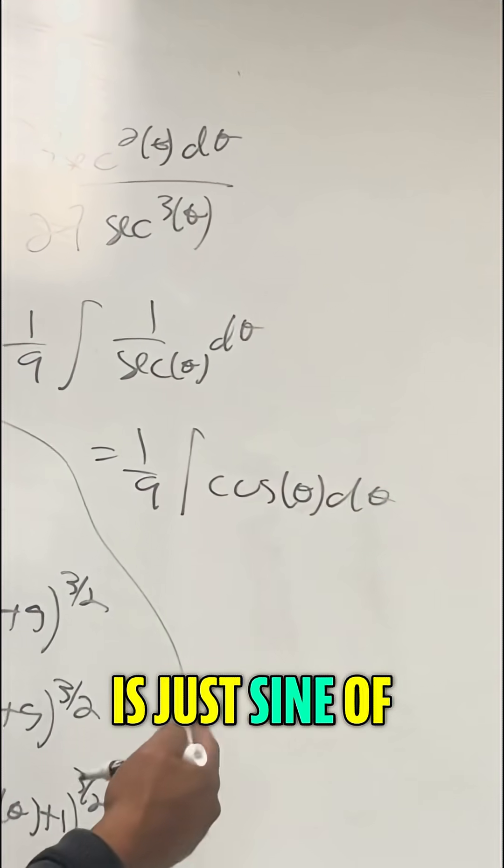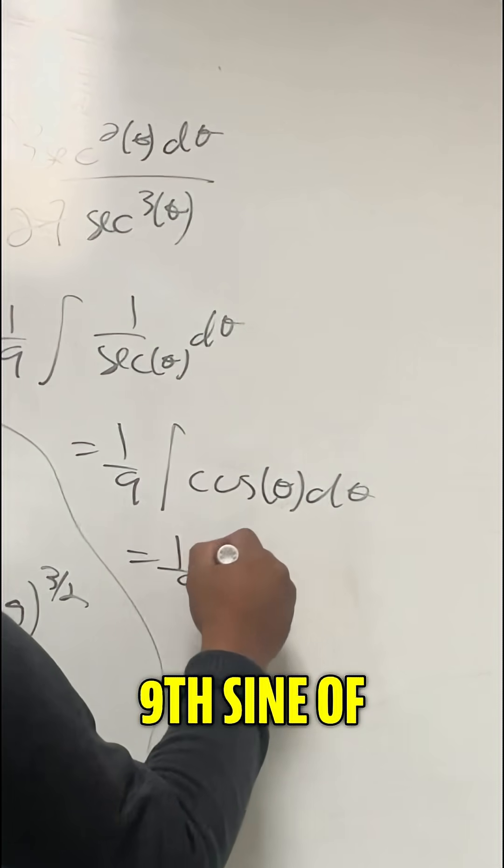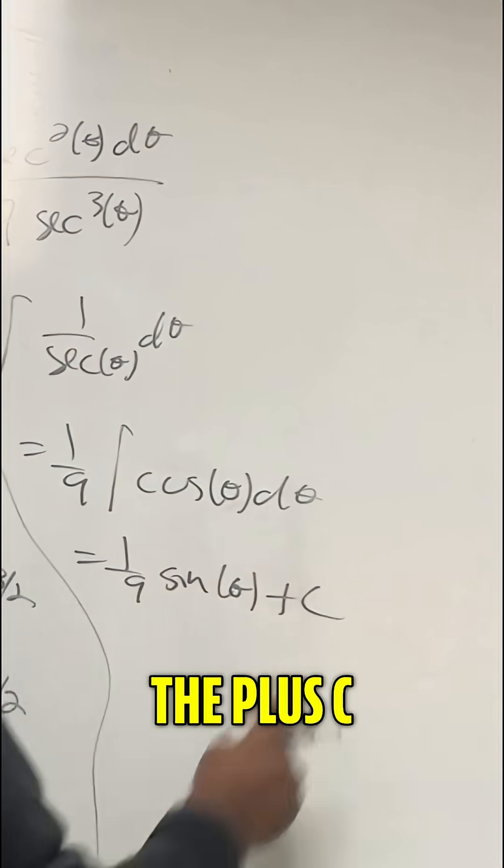We know the integral of cosine is just sine of theta. But this is 1 ninth sine of theta. Now we're done integrating. We get the plus c.